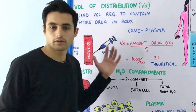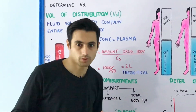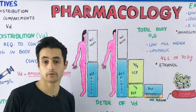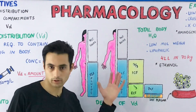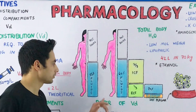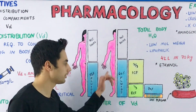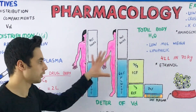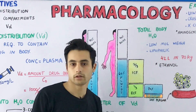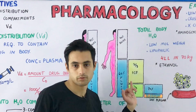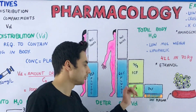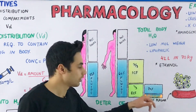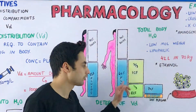Before discussing that, let's revise what are the various water compartments in our body. Have a look at this diagram. In females we have 45% solids and 55% fluid, and in males we have 40% solids and 60% fluid. Now out of this total fluid, two-thirds is present inside the cell — we call that the intracellular fluid — and one-third is present outside the cell, which we call the extracellular fluid.